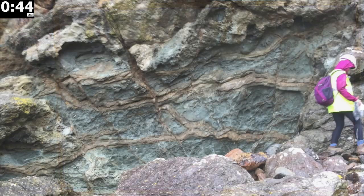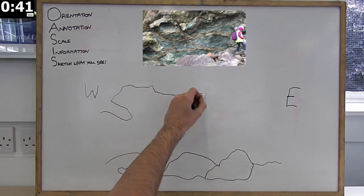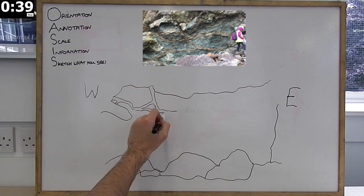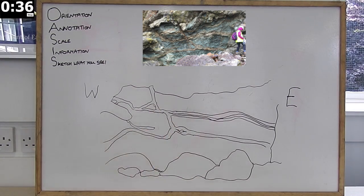The orientation of a sketch is the direction in which you are facing whilst drawing it. A simple way to express this is to mark the compass directions on the left and right hand side of your sketch, in this case east and west.